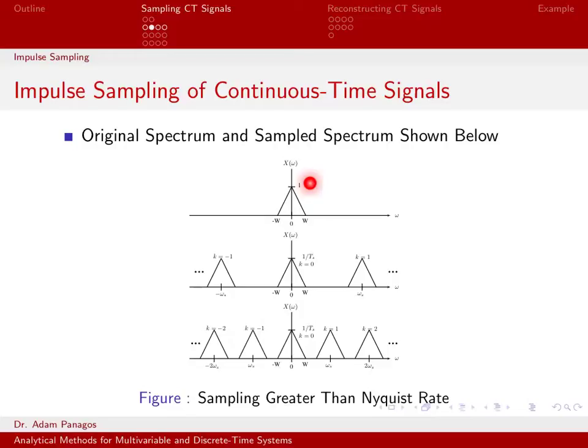We know what happens now when we do impulse sampling. When we do impulse sampling, this shape gets repeated up and down the frequency axis an infinite number of times. And it gets shifted up and down in multiples of our sampling frequency, omega s.